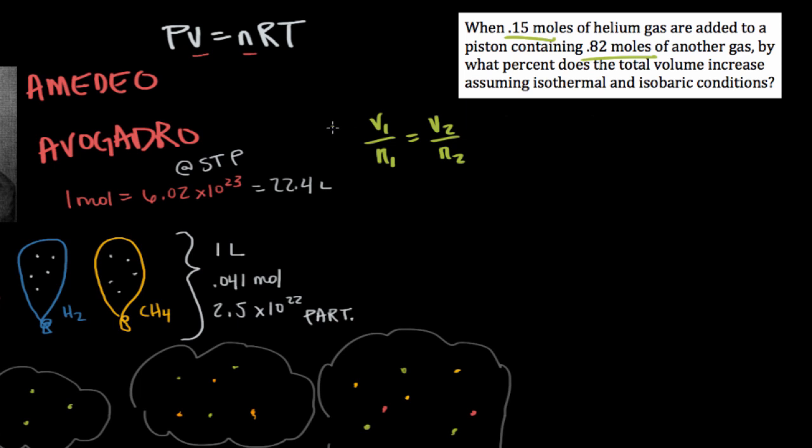The initial conditions would equal the final conditions. We have a ratio set up here, and we can rearrange this ratio to say that V1 over V2 is equal to N1 over N2. Here we see that the increase in volume is directly proportional to the increase in moles.